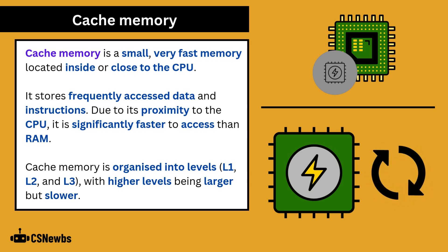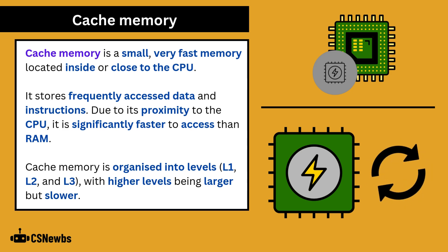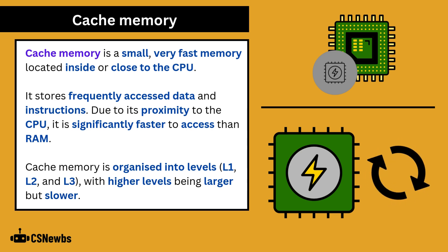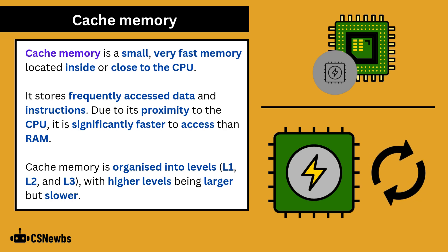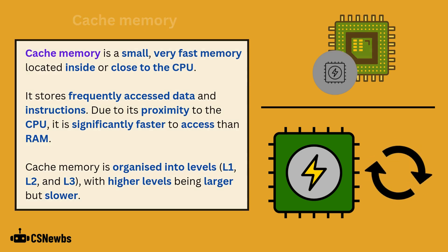Cache memory stores frequently accessed data and instructions, and due to its proximity to the CPU, it is significantly faster to access than RAM. Cache memory is organized into levels — level 1, 2, and 3 — with higher levels being larger but slower.